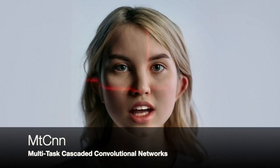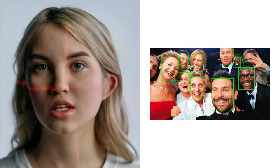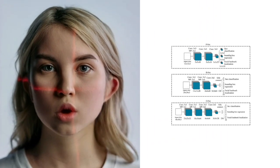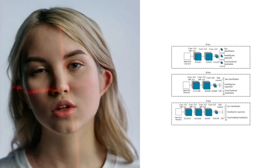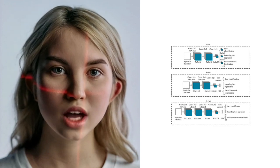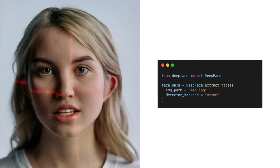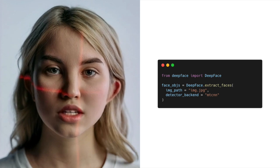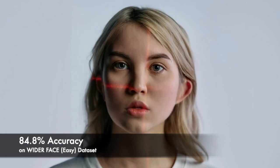Next up is MTCNN, which stands for Multitask Cascaded Convolutional Networks. MTCNN is a deep learning model that can perform face detection and landmark detection simultaneously. MTCNN is composed of three stages. First, a proposal network generates candidate bounding boxes. Second, a refinement network filters out false positives and refines the bounding boxes. And finally, a landmark regression network detects the facial landmarks and aligns the faces. In DeepFace, we can use MTCNN as the detector backend. MTCNN achieved an average accuracy of 84.8% on the easy wider face dataset.